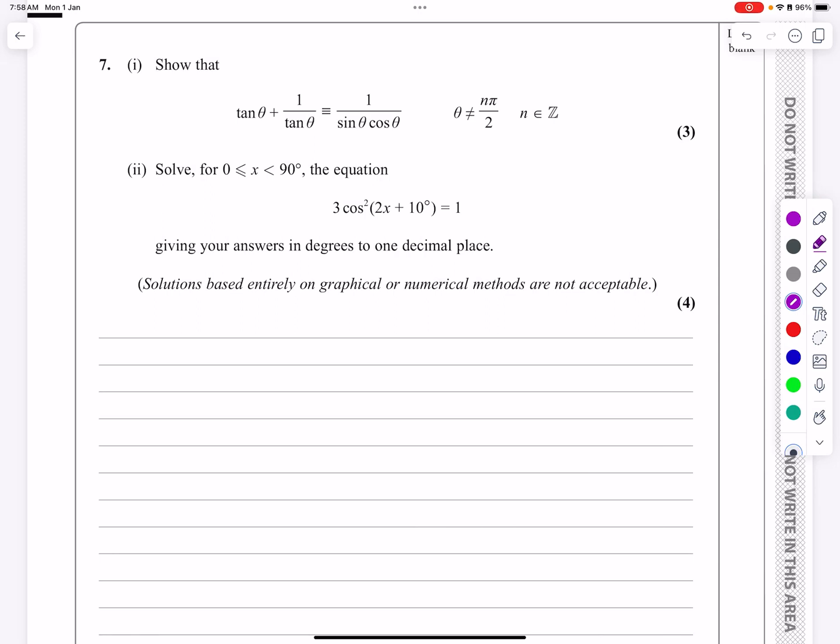This is the P2 paper from October 2020, question number 7, which is a trig identities question to start off with, and then the second part is a simple trig equation.